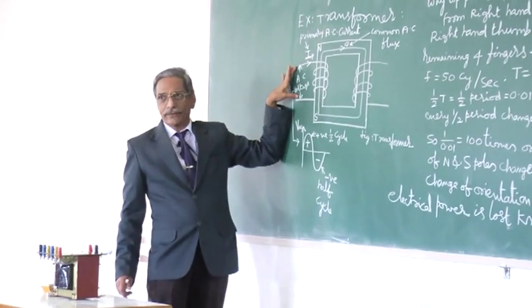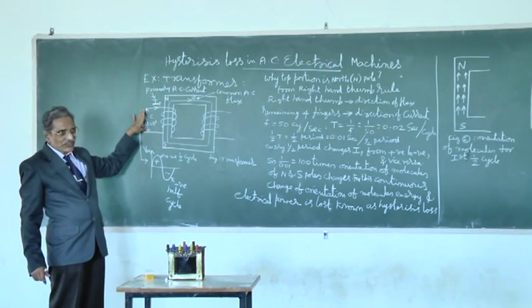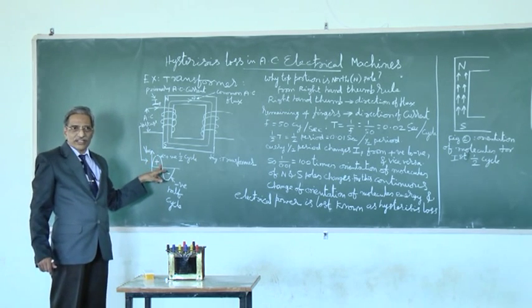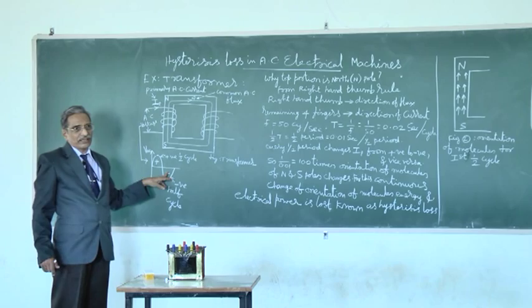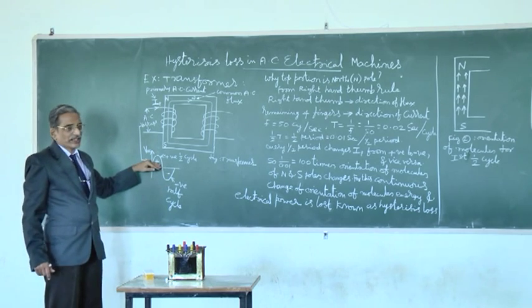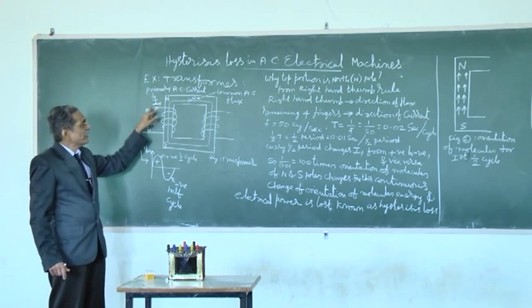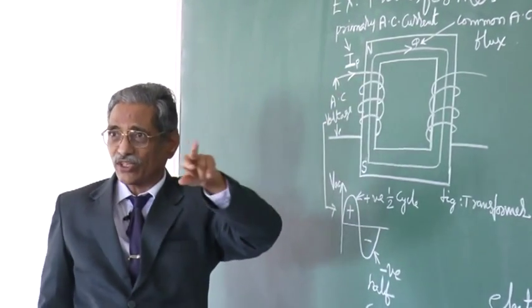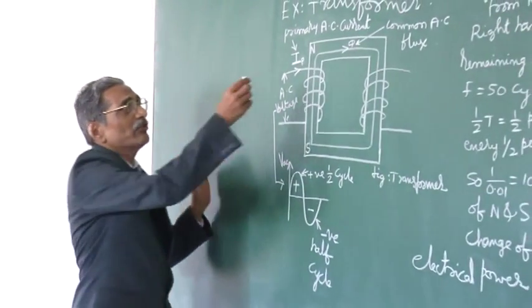Now, let us come to the supply. AC voltage is given here. AC voltage means positive half cycle, negative half cycle. In this positive half cycle, direction of current will be like this. Whereas in negative half cycle, direction of current will be opposite.